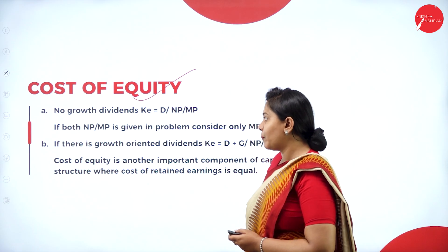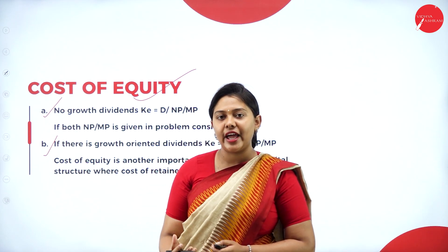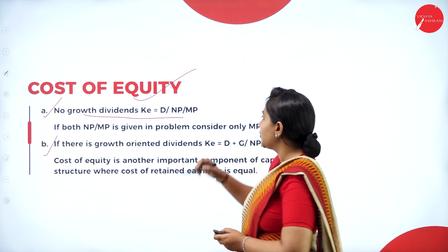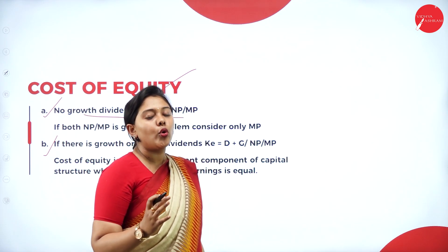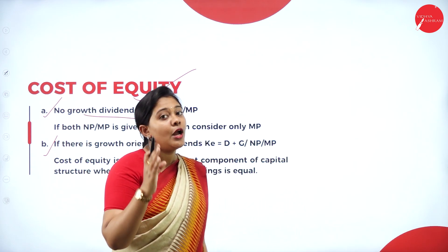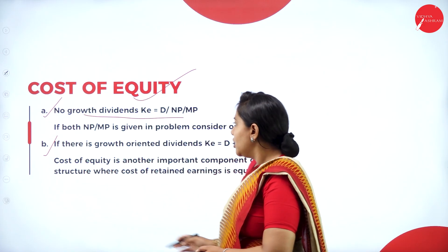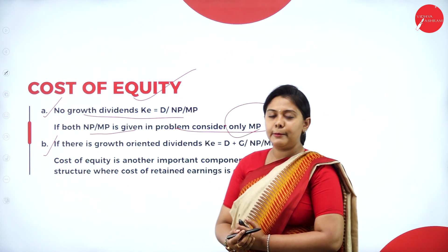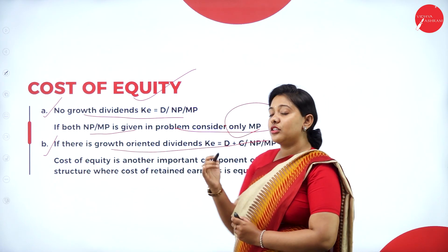Cost of equity under two conditions has different formulas. When there are no growth dividends, the formula is: Cost of Equity = Dividend ÷ Net Proceeds. Whenever market price and net proceeds are both given, you should always consider the market price. So: Dividend ÷ Net Proceeds or Market Price. If both net proceeds and market price are given in the problem, consider only the market price.